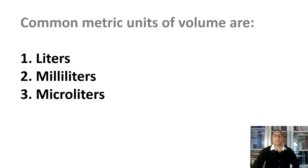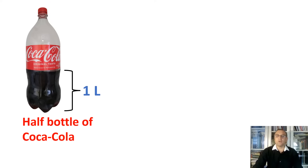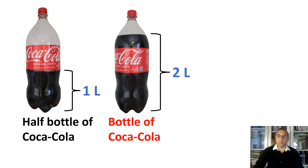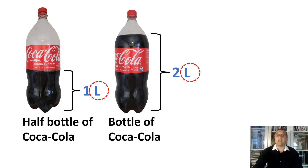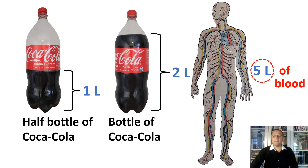Volume tells us how much space something occupies. To measure volumes, we use liters, milliliters, and microliters. Half a bottle of Coca-Cola is precisely one liter. A full bottle of Coca-Cola is two liters. Liter is abbreviated as capital L. There are about five liters of blood circulating in the average human adult body.